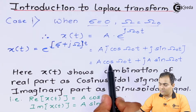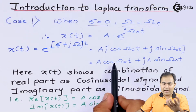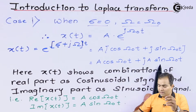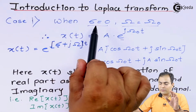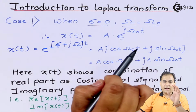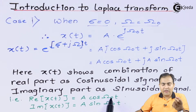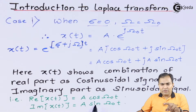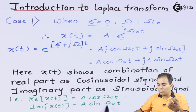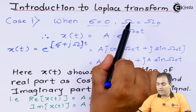After substituting, we can say it is a combination of a real part having a cosinusoidal function and an imaginary part with a sinusoidal function. So X(T) after substituting sigma equal to 0 and omega equal to ω₀ has two values: a real part with amplitude A having a cosinusoidal signal at frequency ω₀, and an imaginary part with amplitude A having a sinusoidal signal at frequency ω₀. This is all about the case sigma equal to 0 and omega equal to ω₀.